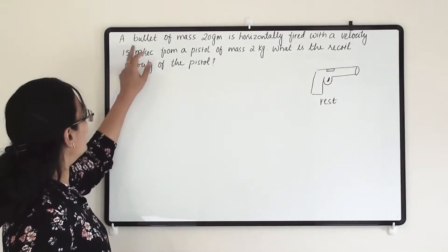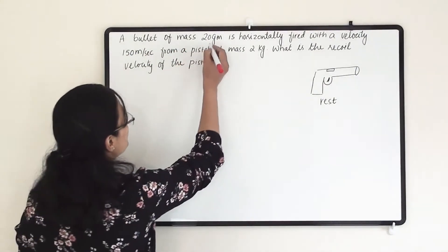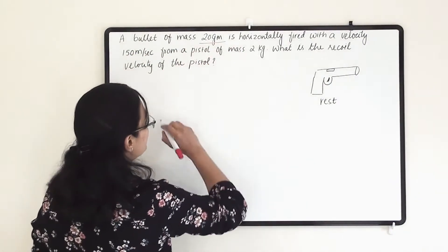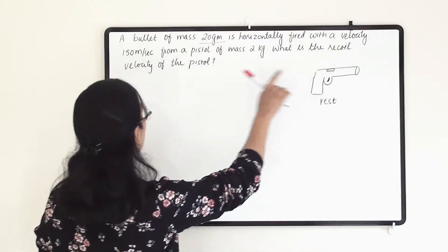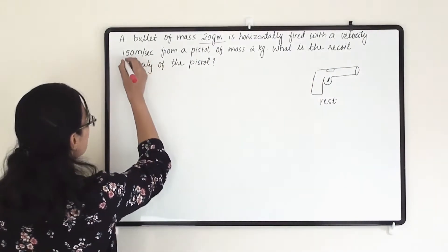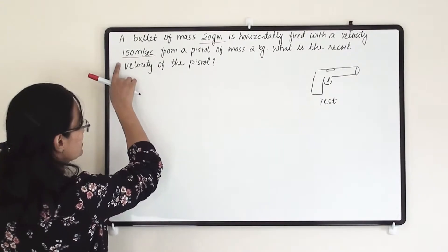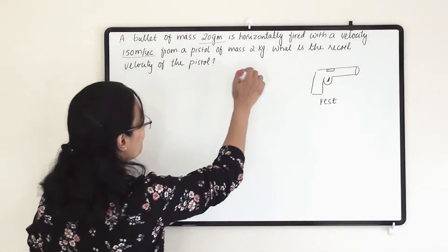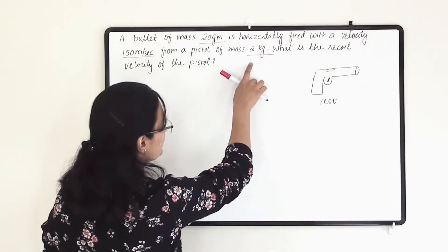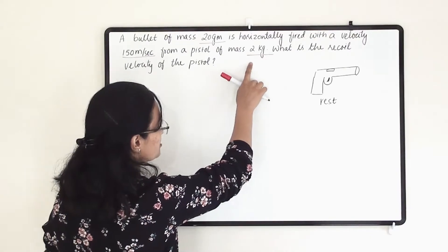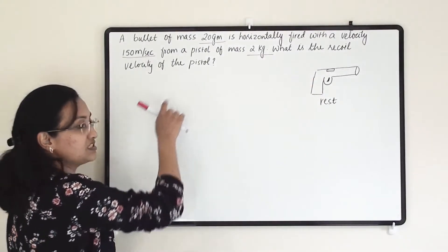A bullet of mass 20 gram is horizontally fired with a velocity of 150 meters per second from a pistol of mass 2 kg. What is the recoil velocity of the pistol?